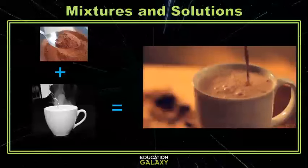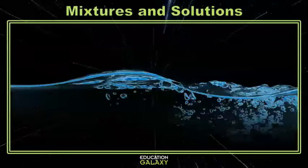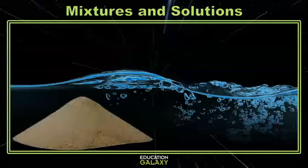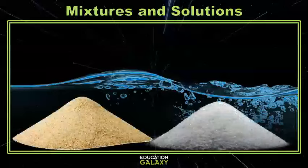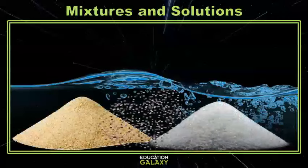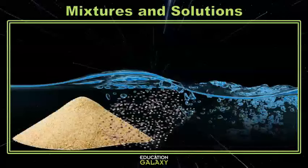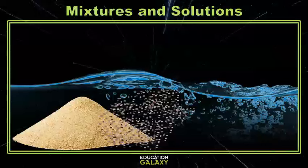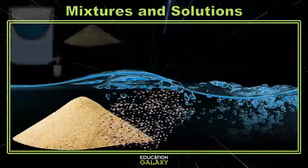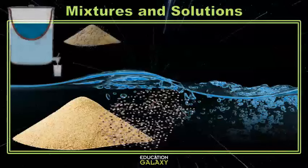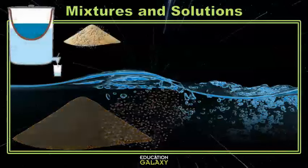Sometimes you end up with a combination of things that are mixed together. Let's say you have sand, sugar, and gravel that you have mixed into your water and you want it removed. The sugar will dissolve while the sand and gravel will just sink to the bottom. You could easily separate all four of these substances by filtering the sand and gravel out of the water using a water filter.